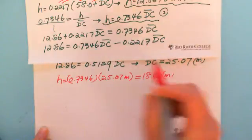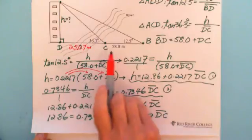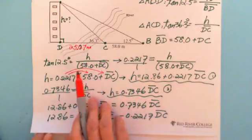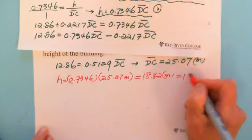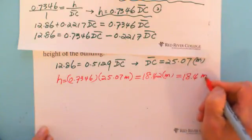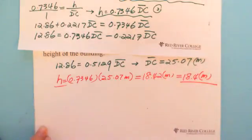We got 18.42 meters. The question only needs 58.0, which is three significant figures. So we can write, actually equals 18.4 meters. So the building is 18.4 meters height.